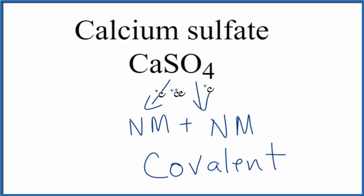While the overall compound is ionic because we have the positive and negative ions, the bonds between the sulfur and oxygens within the sulfate ion are covalent.